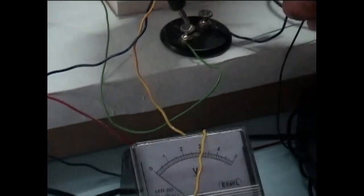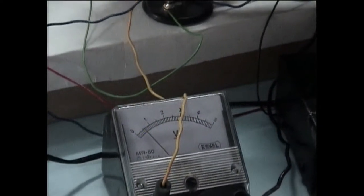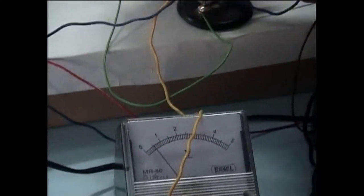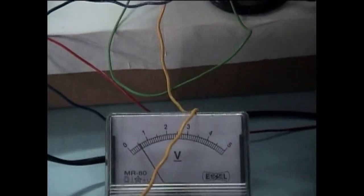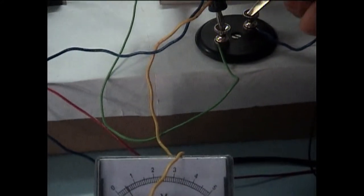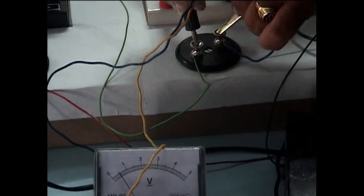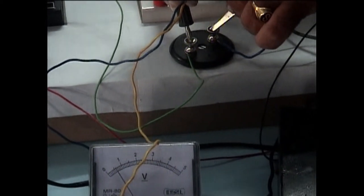Now, the voltmeter is connected across the second resistor which reads only 0.5 volts, because the value of resistor is lesser than that of first.